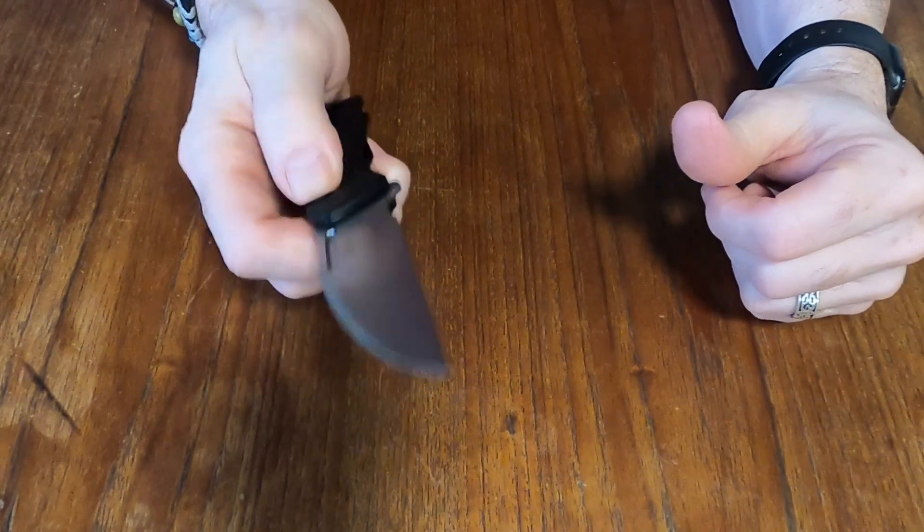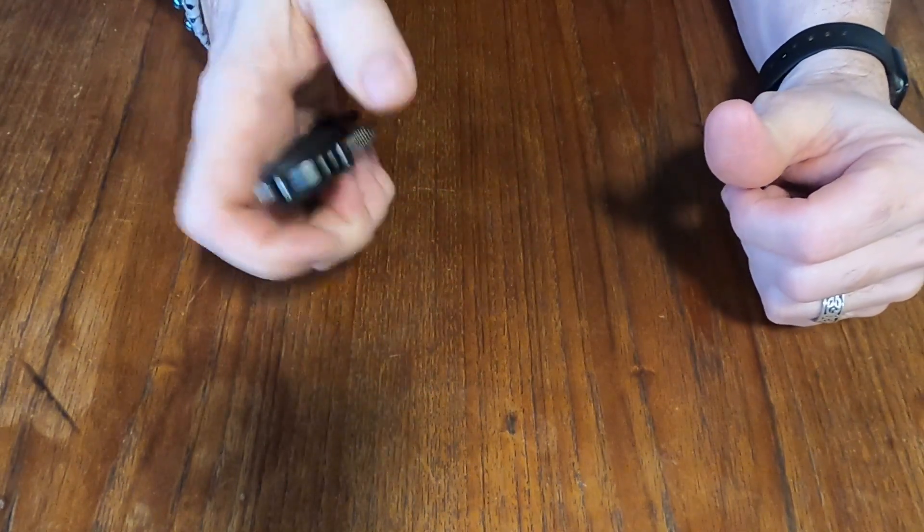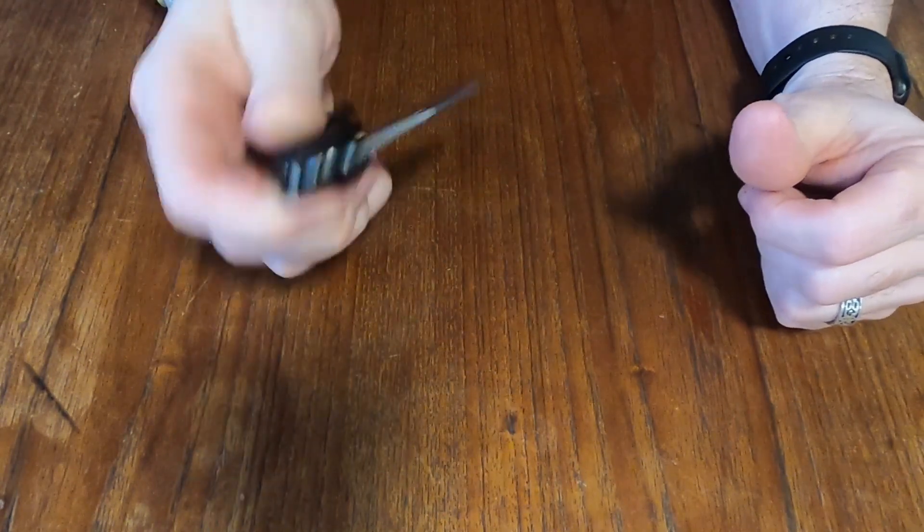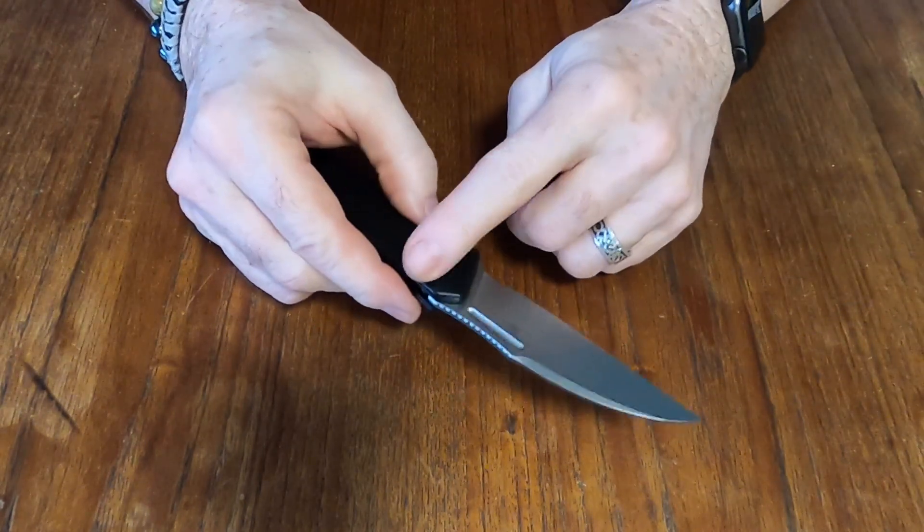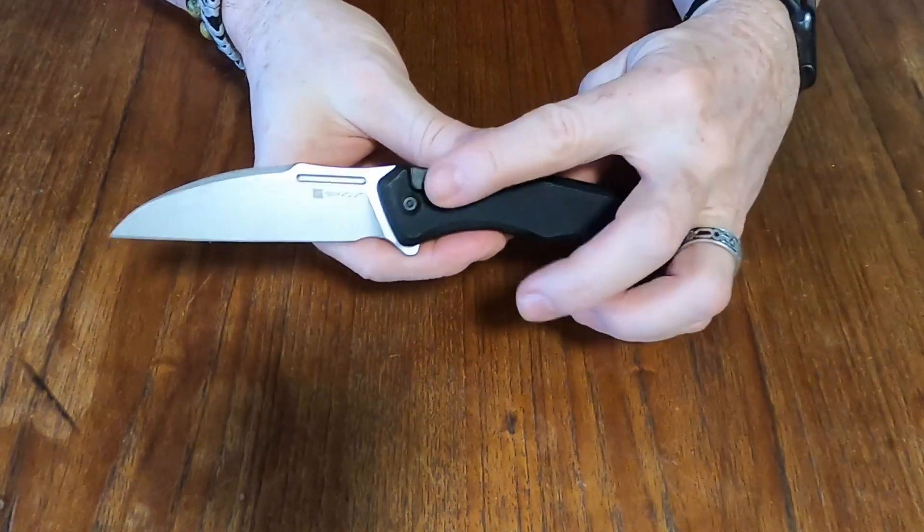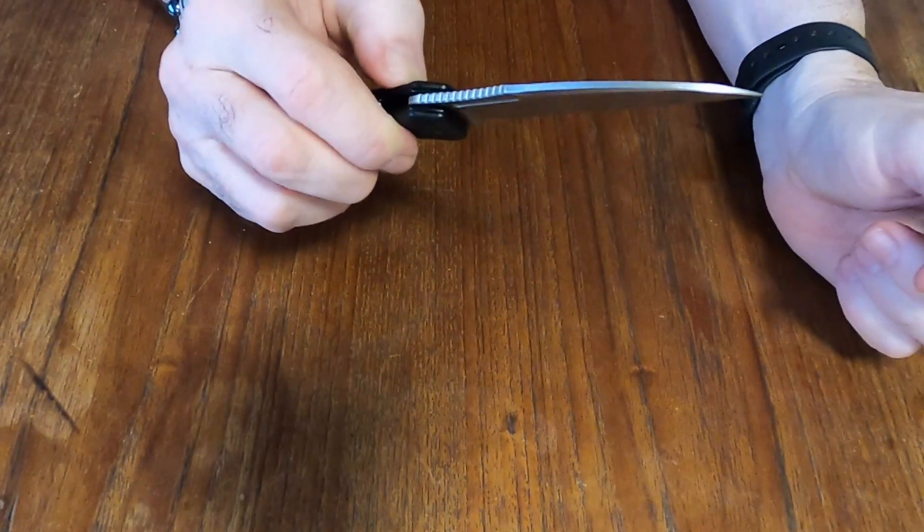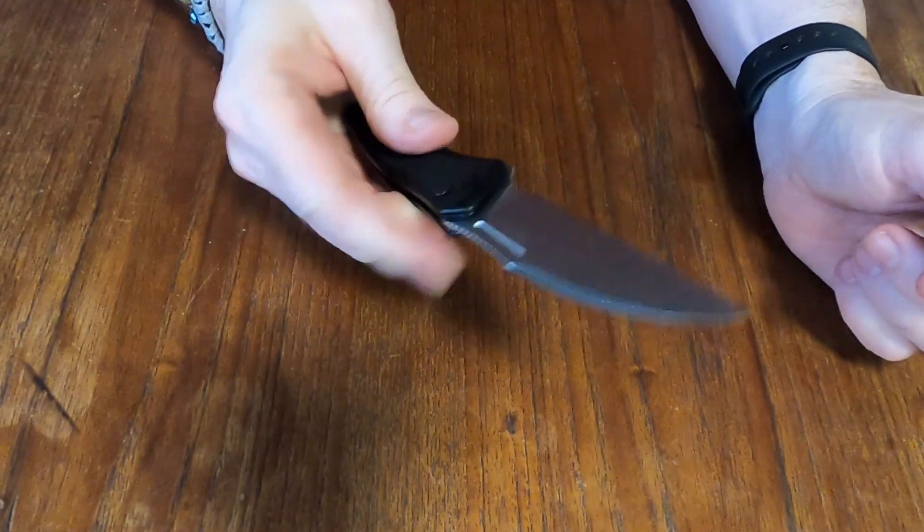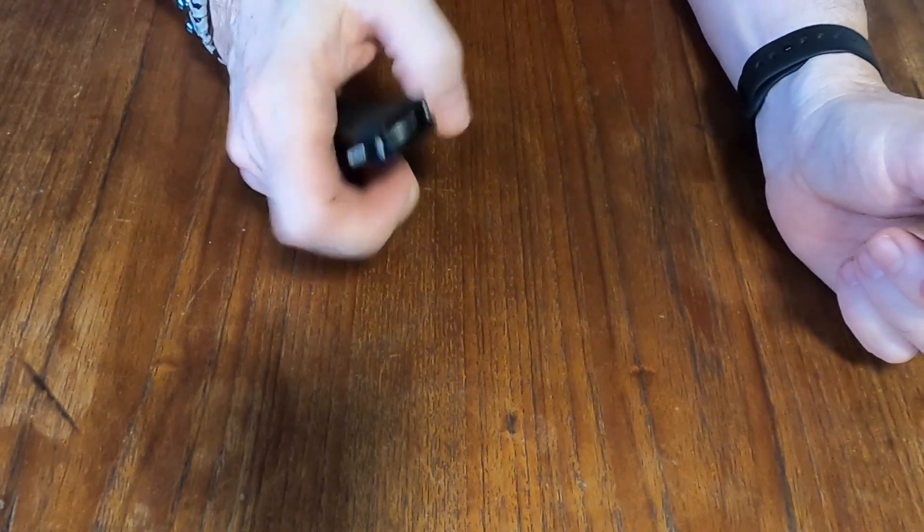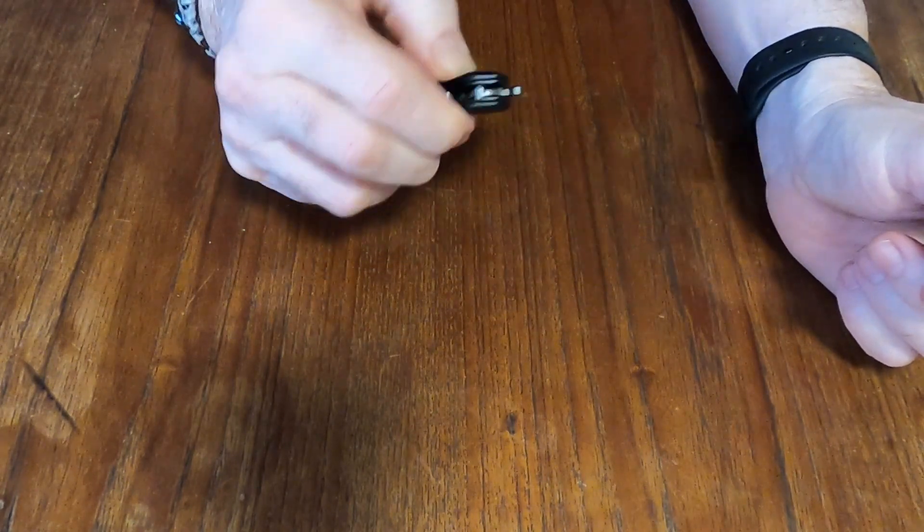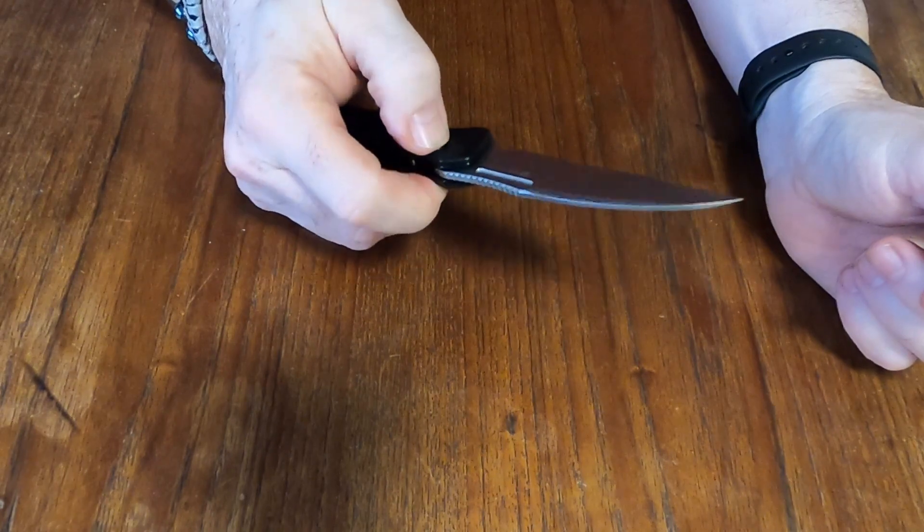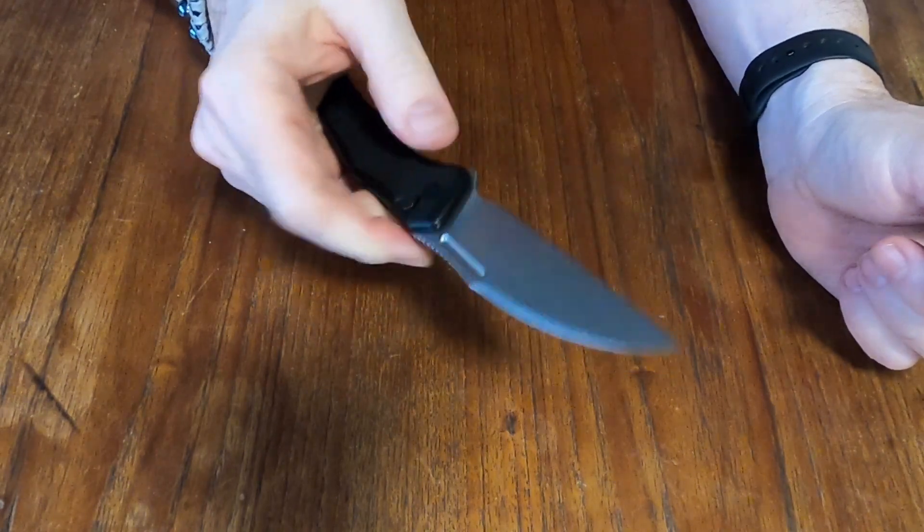And let's see how the button lock works. Oh, nice. Some of the button locks, I really like the button lock on the knives. Glad they came up with that. But some of them you have to push really far down. This one disengages the lock pretty quick. So that's actually quite nice.